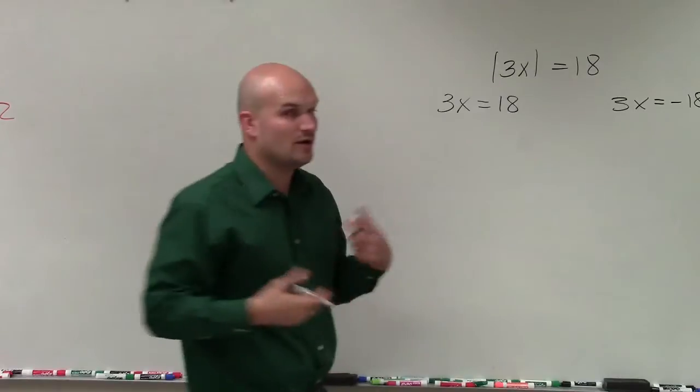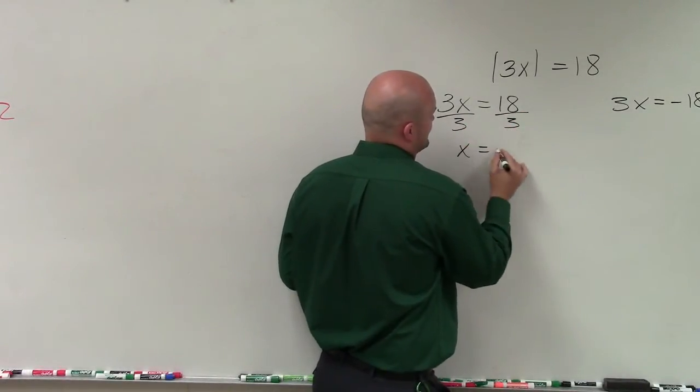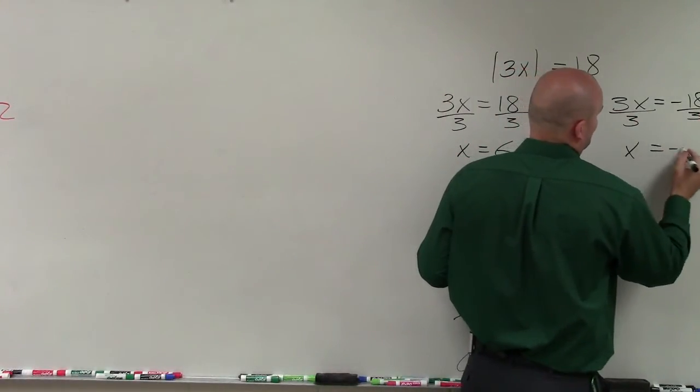Now, to solve, I'm going to solve for x. So I'll divide by 3 on both sides. x equals 6. Here I divide by 3. Divide by 3. x equals negative 6.